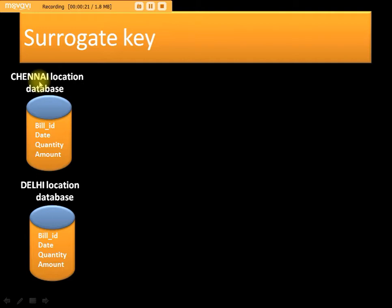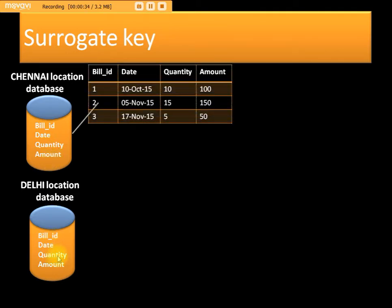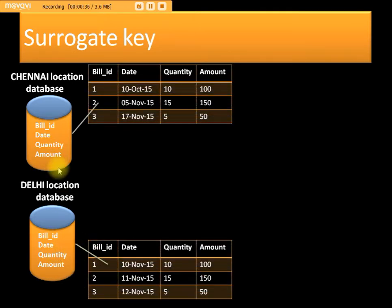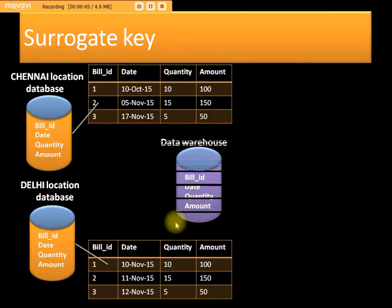We are going to load data from a channel location database and a daily location database. Each has a table with four columns: bill_id, date, quantity, and amount. Both tables are having three records with bill_id one, two, three, with different dates.